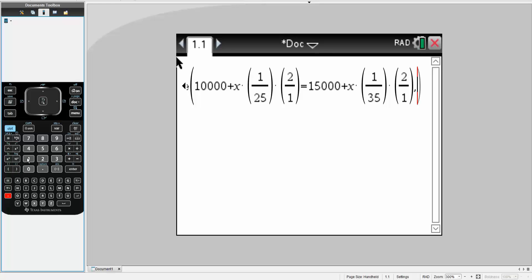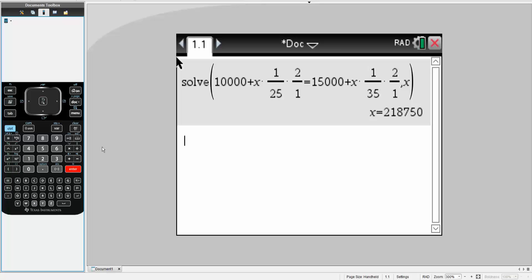We are solving for x. Simply write comma x, hit enter, and it would take for both cars to equal each other 218,750 miles. That's all we need to do for this problem.